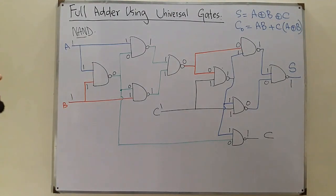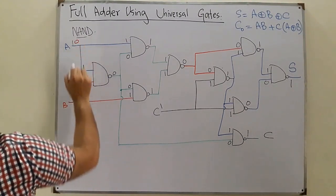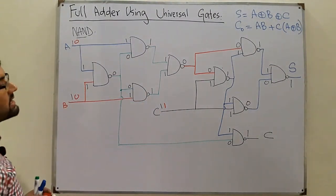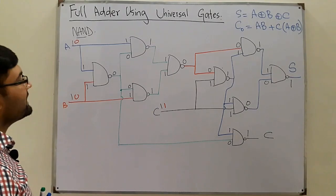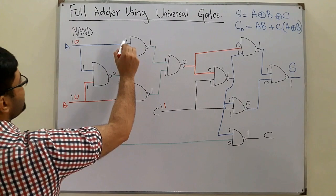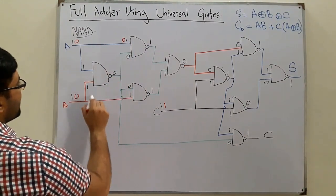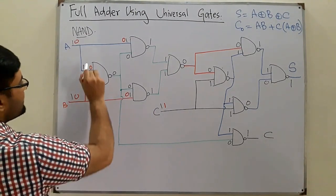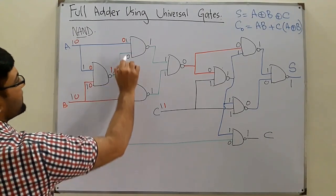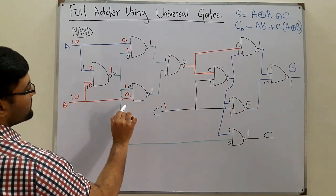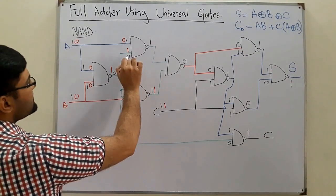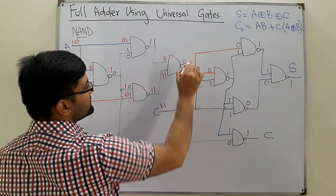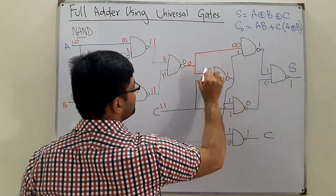Now let's change the values: A=0, B=0, C=1. In this case the sum has to be 1 and the carry has to be 0. We have 0 at A and 0 at B. So 0 NAND 0 gives 1, meaning we have 1 and 1 at those outputs. Then 1 NAND 0 gives 1 and 1 NAND 0 gives 1, so we have 1 and 1, giving 0.